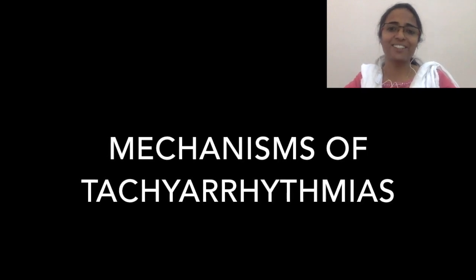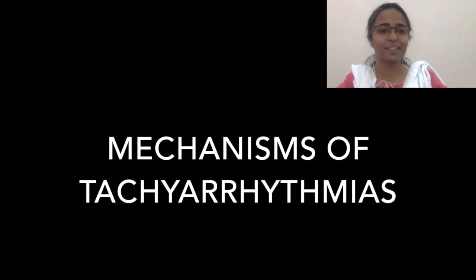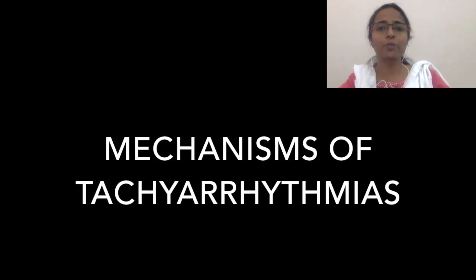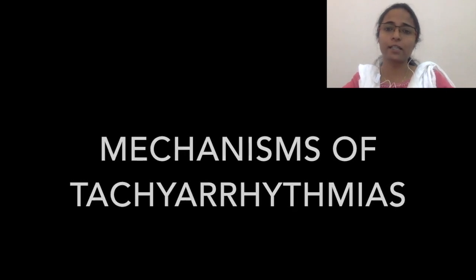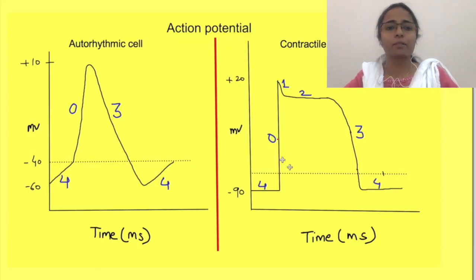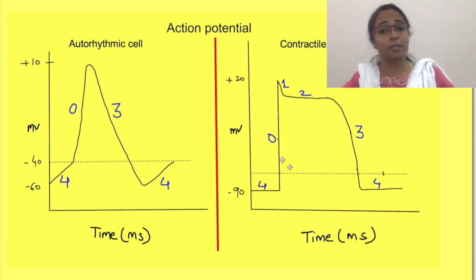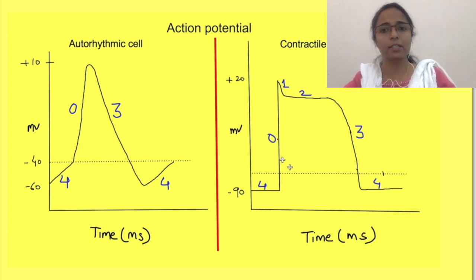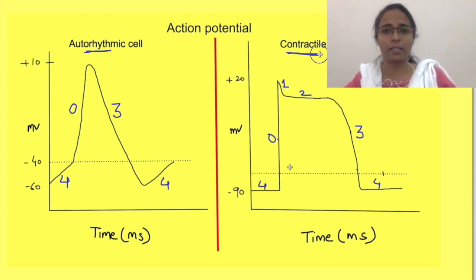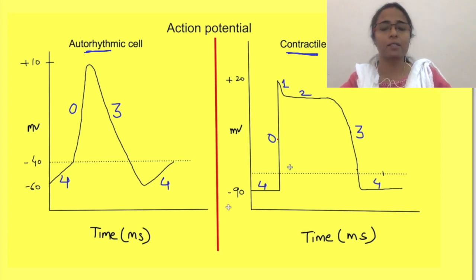Hi, welcome to Physiology Open. In this video, we are going to learn about the fundamental ways in which tachyarrhythmias may develop. To understand the topic, it is important that you know about how action potential is generated in pacemaker cells as well as in cardiac contractile cells. So if you don't know about them, I will request you to go through the playlist given in the description section below.